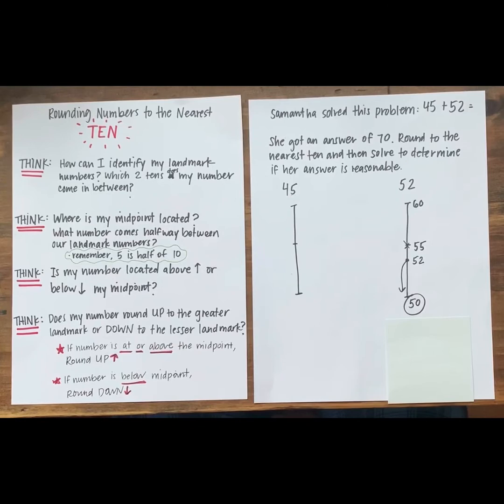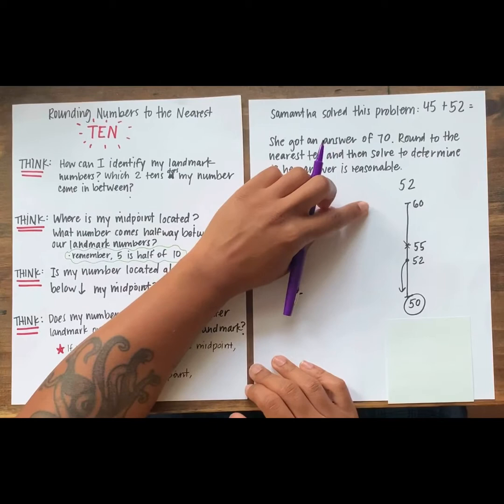We know that we can use rounding to help us figure out an estimate or about how much, and we can also use it to check our work and help us think, does this answer make sense?